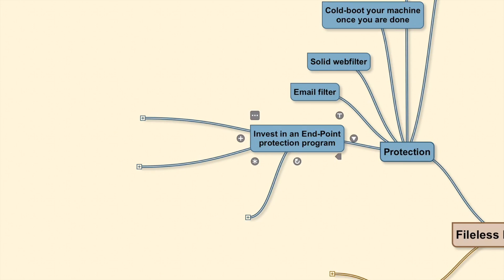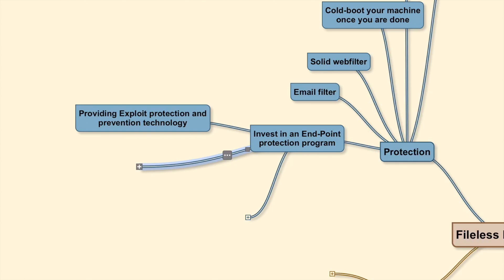Next, invest in a rock-solid endpoint protection solution. Apart from signature-based prevention and machine learning techniques, the protection program should also provide exploit protection and prevention technology. This would proactively seal exploits that are still not fixed by OS patches. It could even sandbox old releases or legacy software that cannot be updated due to critical application dependencies — for example, software using an old version of Java. Sandboxing is a good option provided by some protection software. The product should also have a streaming prevention technique.